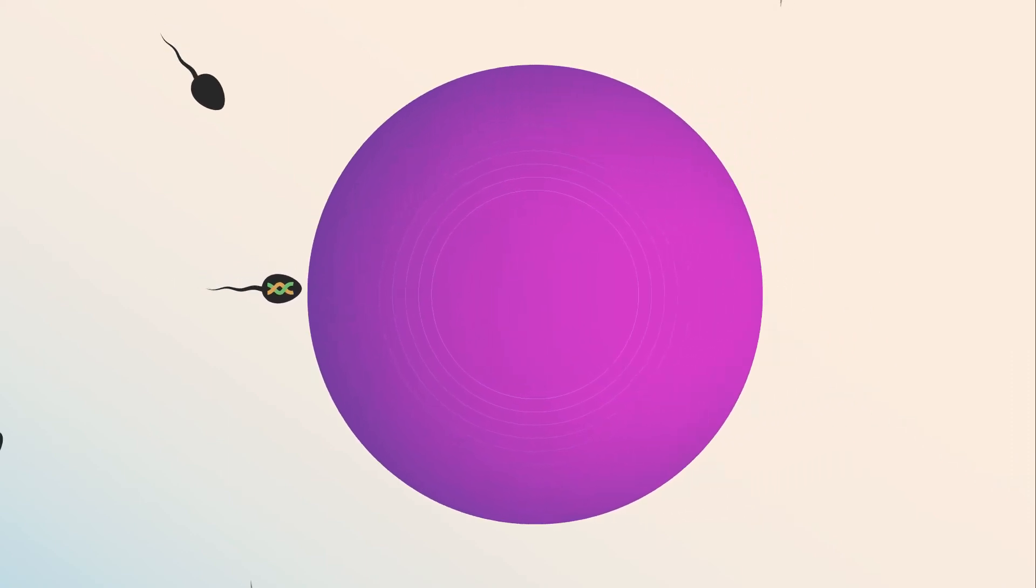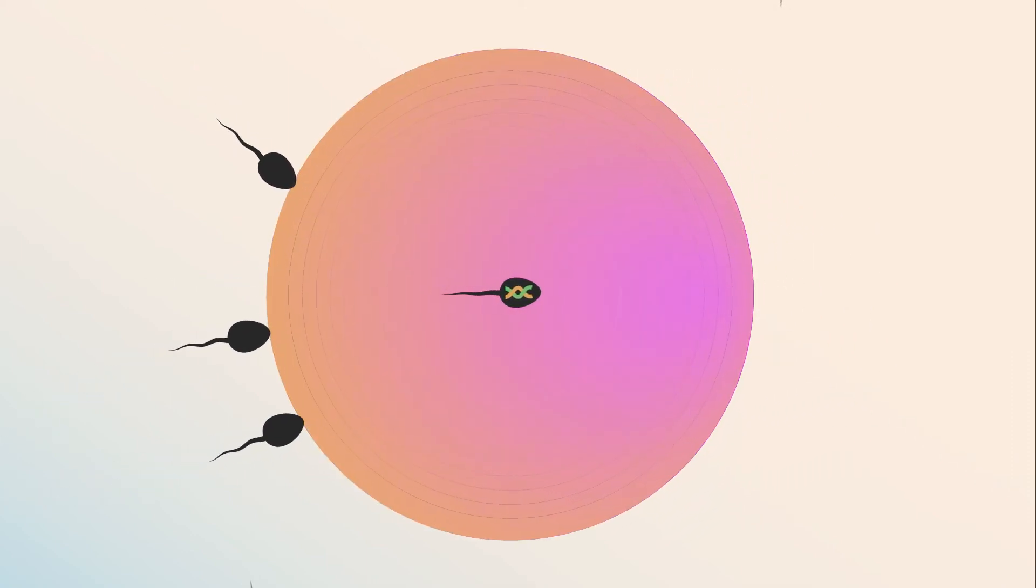Sperm are released when you ejaculate. They're tiny, free-swimming cells whose job is to carry genetic information to the egg.